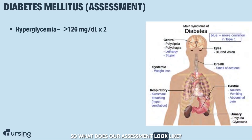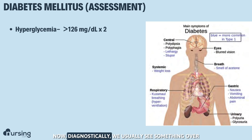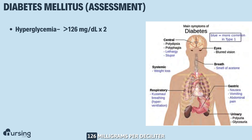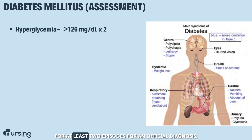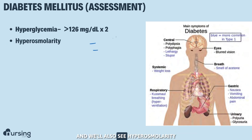So what does our assessment look like? Of course, we're going to see hyperglycemia. Diagnostically, we usually see something over 126 milligrams per deciliter for at least two episodes for an official diagnosis.